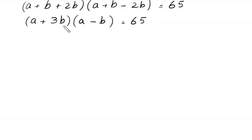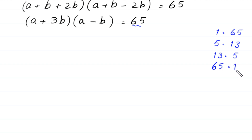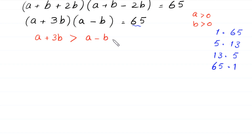On the left side we have a product of two factors, and 65 can be factorized as 1 times 65, 5 times 13, 13 times 5, and 65 times 1. Because a and b are greater than 0, the expression (a plus 3b) must be greater than (a minus b). So 1 times 65 is rejected because 1 is smaller than 65, and 5 times 13 is rejected because 5 is smaller than 13. We have only two cases: case 1 is 13 times 5, and case 2 is 65 times 1.